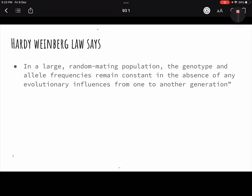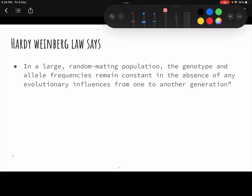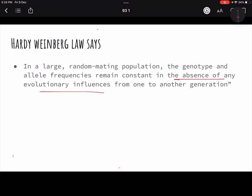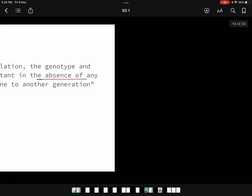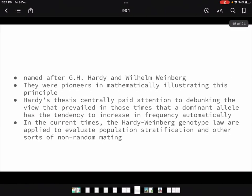We had already discussed yesterday that Hardy-Weinberg law tries to give us a model wherein we can create a baseline whenever there are no evolutionary influences or when there is absence of any evolutionary influences. How genotype or allelic frequencies in a population are maintained. For that, there are certain assumptions which we were talking yesterday also.